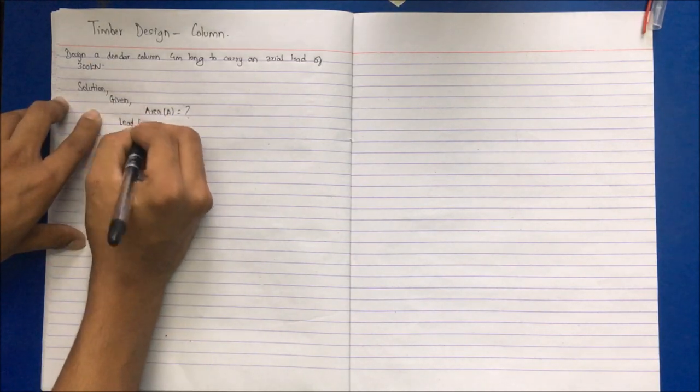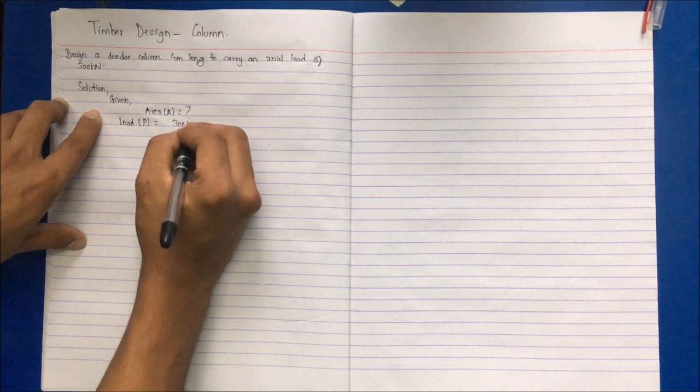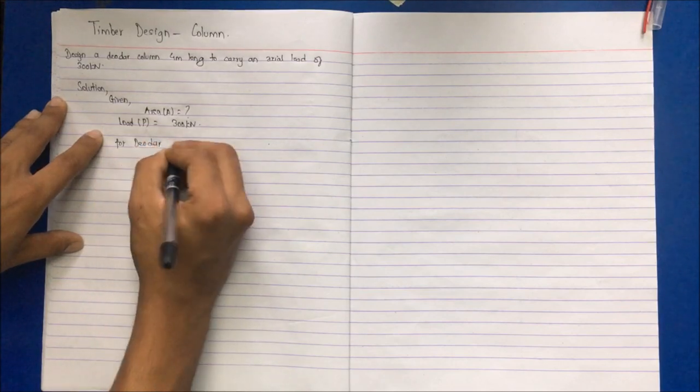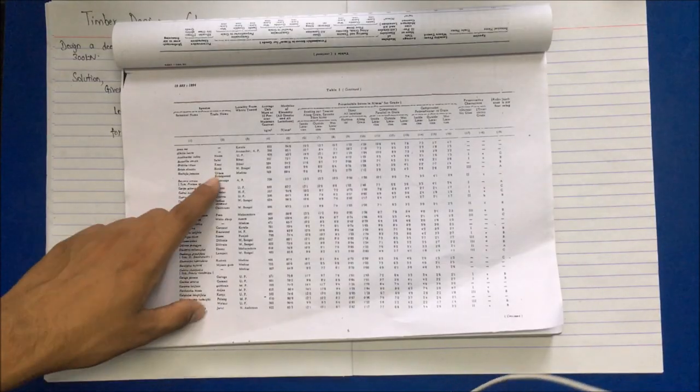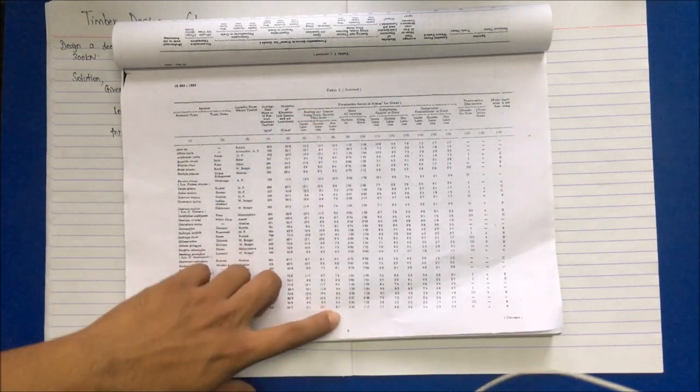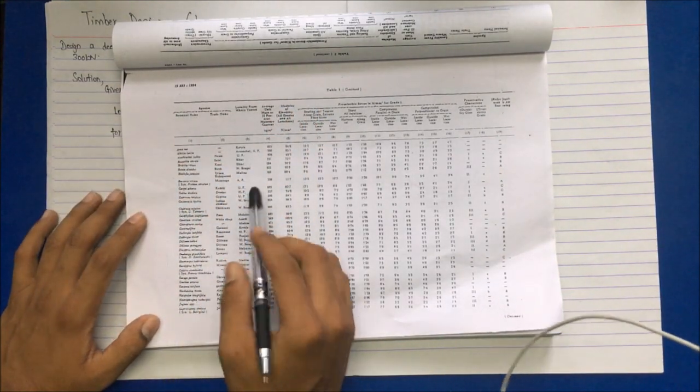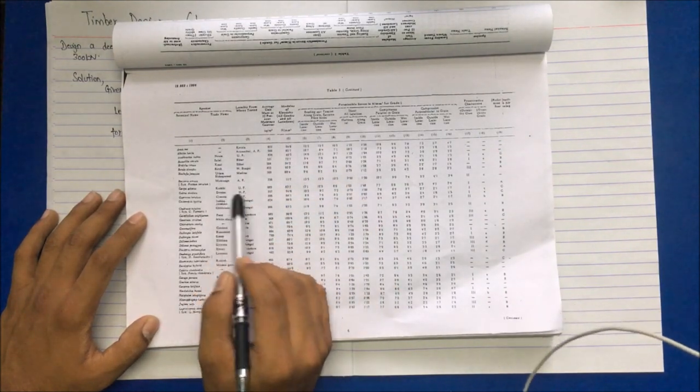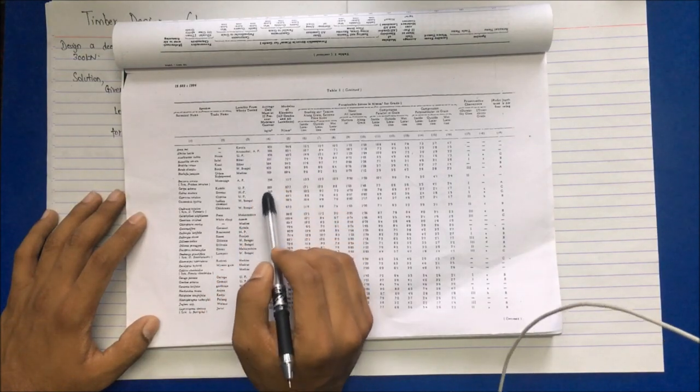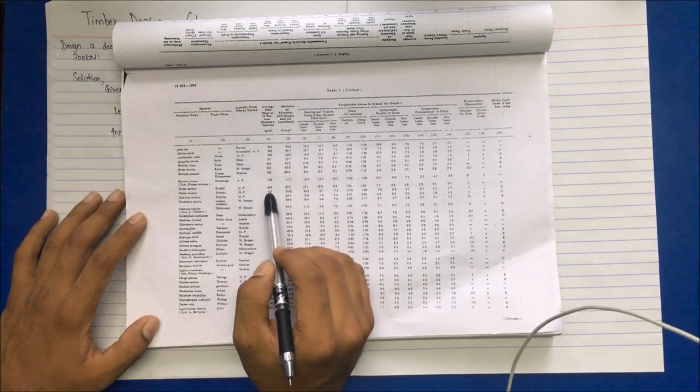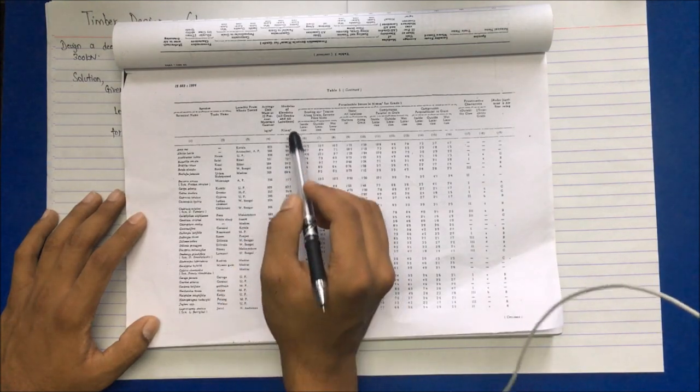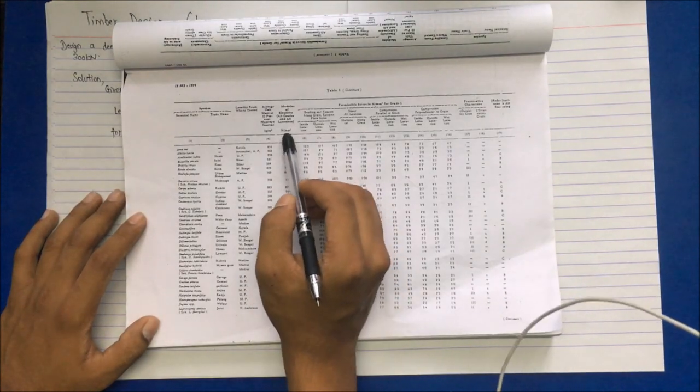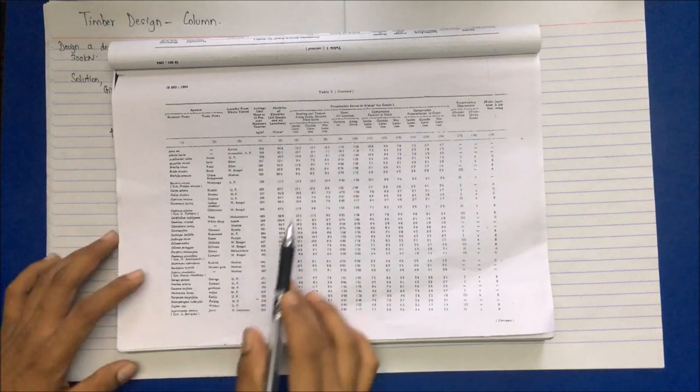For deodor, at page number nine of table one, I find the values for average unit mass and modulus of elasticity. Deodor of Himachal: rho is 557 kg per meter cube, and modulus of elasticity is 94.8 into 10 to the power 2 newton per mm square. This has to be corrected in this table.